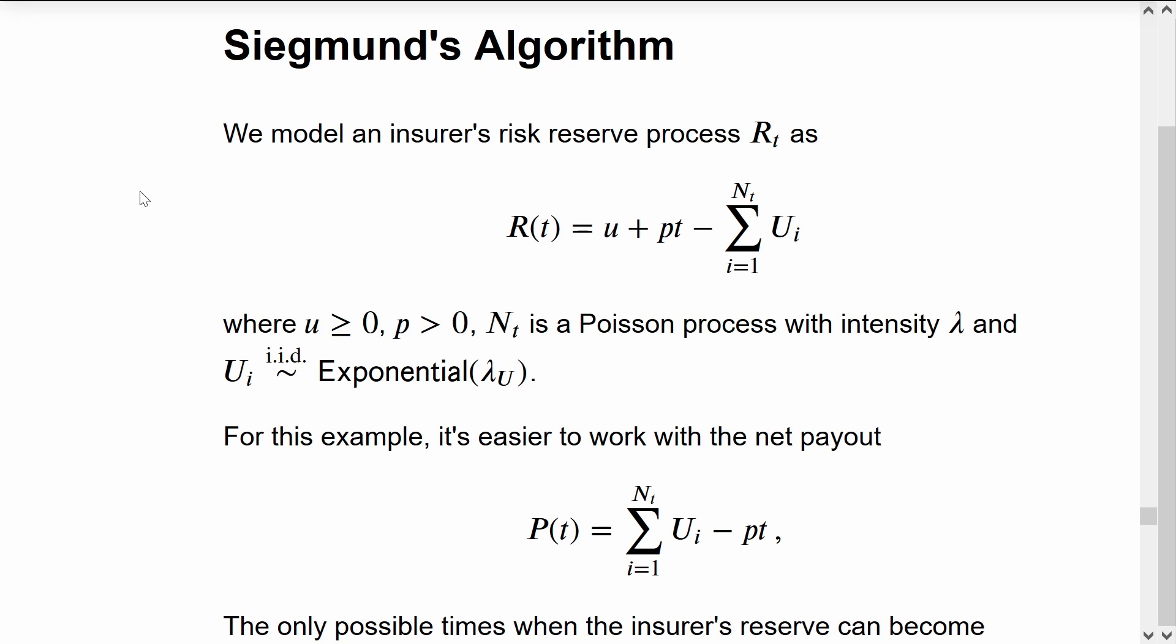We'll look at a classical model for an insurer. They have a reserve which increases at a constant rate P by collecting premiums over time. Claims arrive according to a Poisson process.